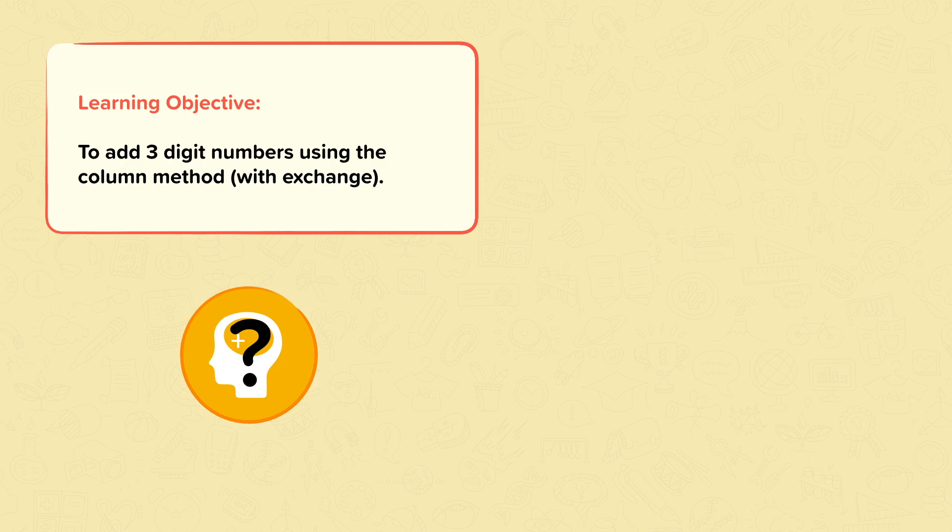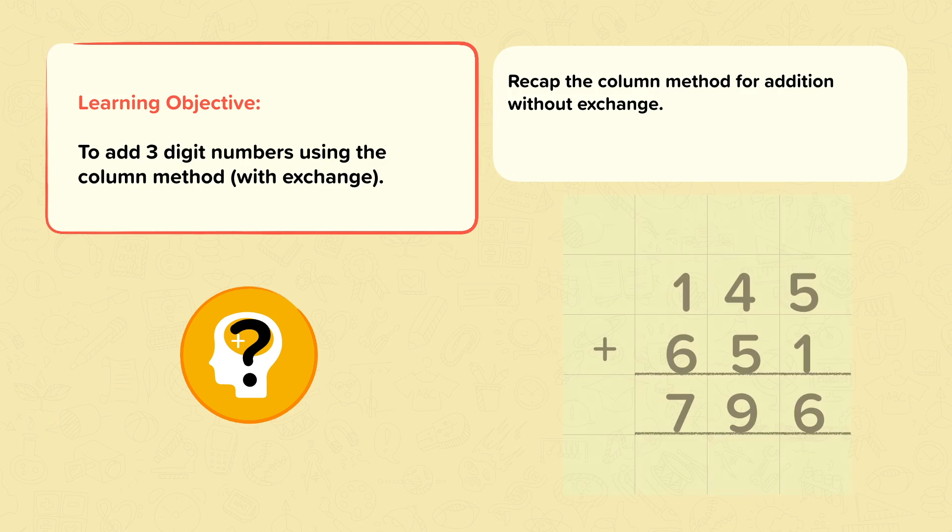It's quite difficult to add two three-digit numbers together in your head. The column method makes things much easier. In this nugget, we'll recap the column method for addition without exchange, and then we'll use the column method with exchange.